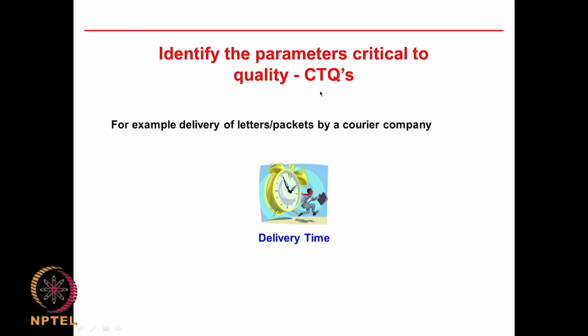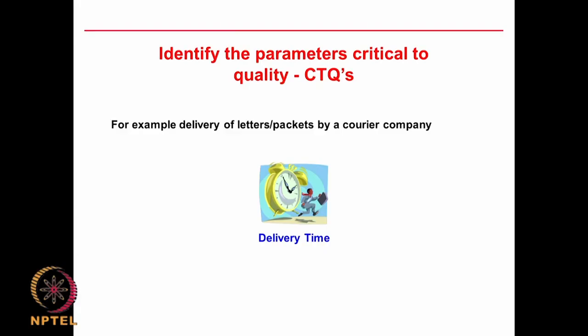Let us look at some new terms. This is called critical to quality. We need to identify which parameters are very important and which are not. In bioprocess product development, you can think of hundreds of parameters — carbon concentration, nitrogen concentration, various micronutrient concentrations, pH, temperature, agitator RPM, amount of oxygen being bubbled — so many parameters, but only a few will be very important. That is called critical to quality. The goal is to identify those few and focus on controlling them.